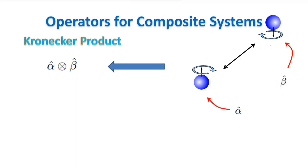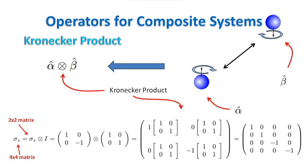I will give you now a quicker way to calculate operators acting on composite systems. If you have an operator alpha relevant to a measurement on the first particle, and an operator beta relevant to a measurement on the second particle, the operator relevant to the resulting measurement on the composite system is simply the Kronecker product of the matrix representations of the two operators. Note that, although the same symbol is used, the Kronecker product among matrices must not be confused with the tensor product. They are two different things.